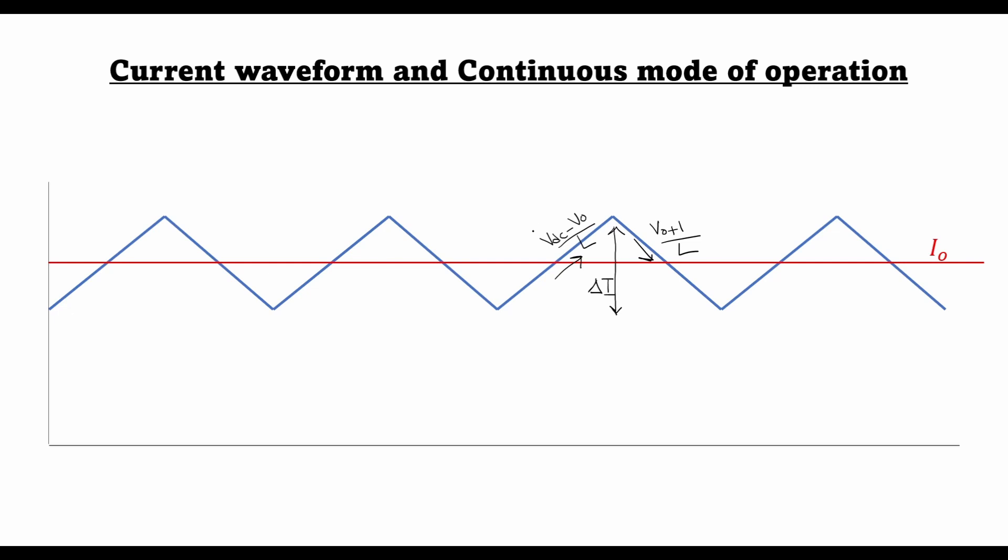You can see that these expressions are independent of the output load current. Therefore, if the output current decreases in a buck converter, these slopes should remain the same. So if the load current is decreased